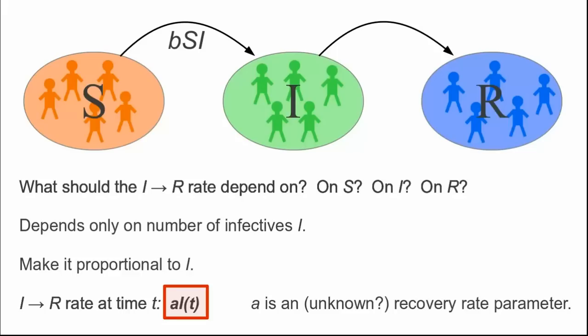The recovery rate parameter captures how quickly an individual recovers from the disease. If A is small, then an infected person would stay infected for a long time and might have the opportunity to infect lots of others. If A is a larger number, the illness is brief. We label the I to R arrow by the rate A times I.